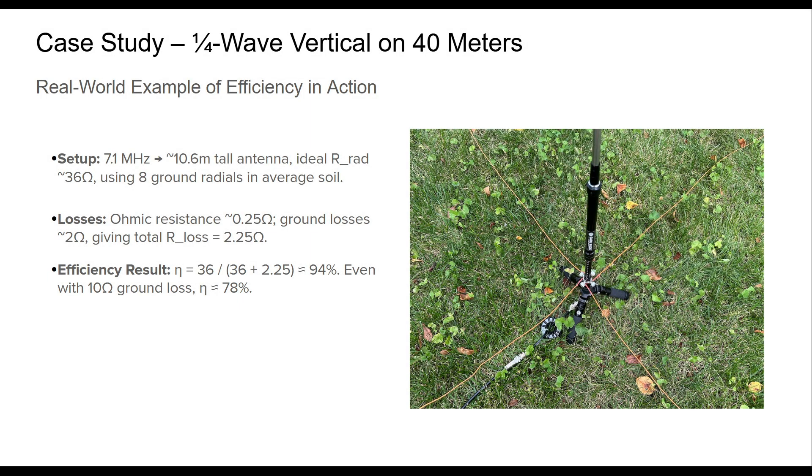A quarter-wave vertical on 40-meter band offers a perfect snapshot of how efficiency metrics play out in real-world antenna systems. At 7.1 MHz, a vertical of about 10.6 meters is near-resonant, offering a radiation resistance of roughly 36 ohms. With eight properly installed ground radials and quality wire, we can assume 2 ohms of ground loss and 0.25 ohms of ohmic loss. Plugging these values into the formula gives us a system efficiency of about 94%. If soil conductivity were worse, say with 10 ohms of ground loss, that efficiency would drop to about 78%. Still acceptable, but clearly impacted. This case shows the power of engineering decisions—ground systems, conductor quality, and minimum coil losses all matter. Even small tweaks can shift your setup from mediocre to highly efficient.